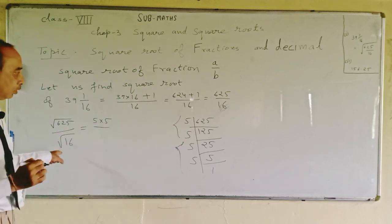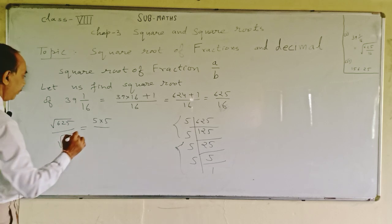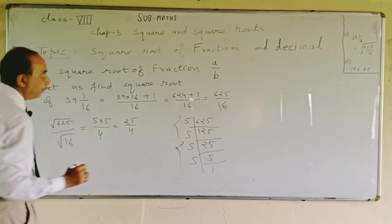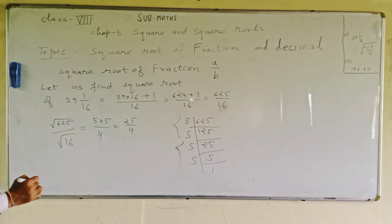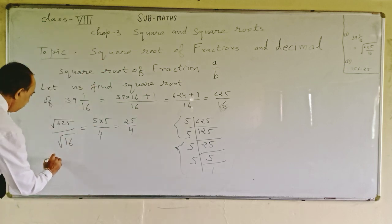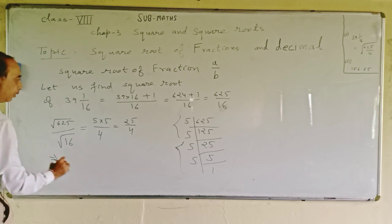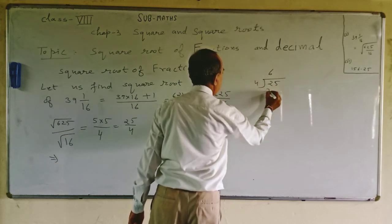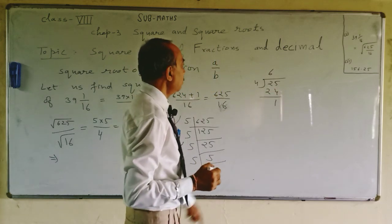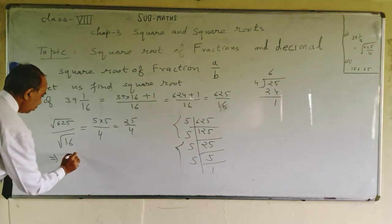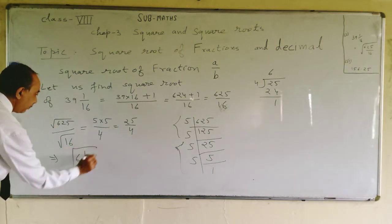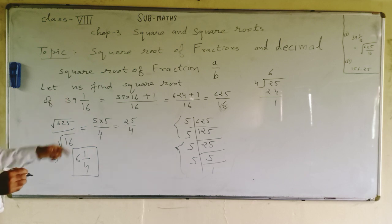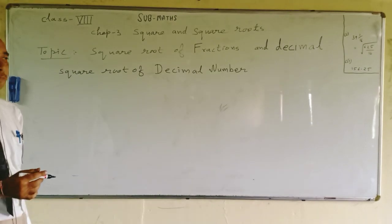We know that the square root of 16 is 4, and the square root of 625 is 25, so our answer is 25 upon 4. But we have to write our answer in mixed fraction form because our question was in that form. Dividing 25 by 4: 4 sixes are 24, remainder 1, giving us 6 and 1 upon 4. So 6 and 1 upon 4 is the square root of 39 and 1 upon 16.